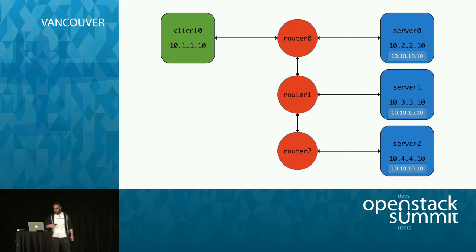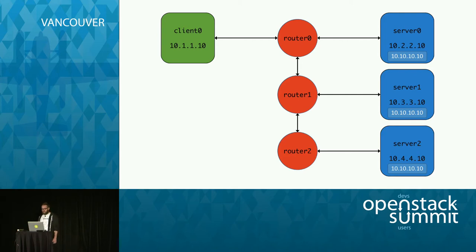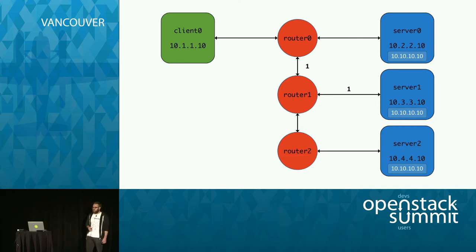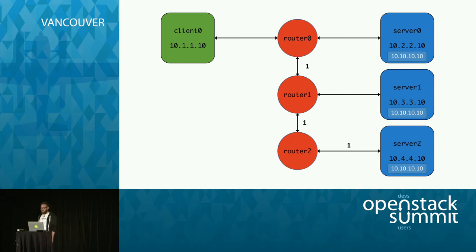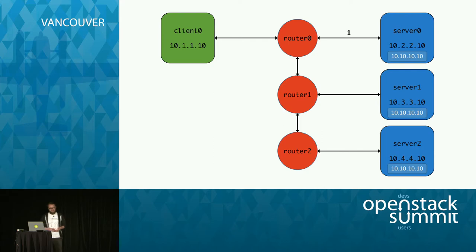When client zero sends traffic destined for the Anycast address, the process is a little different. The packets egress from client zero and reach router zero. The router says, 'I have three different ways I can reach my destination.' It can take one hop to server zero, two hops via router one to server one, or three hops via router one and router two to server two. One hop is the shortest path, so that is the path the traffic will follow. This is what is meant by sending data to the topologically nearest node.